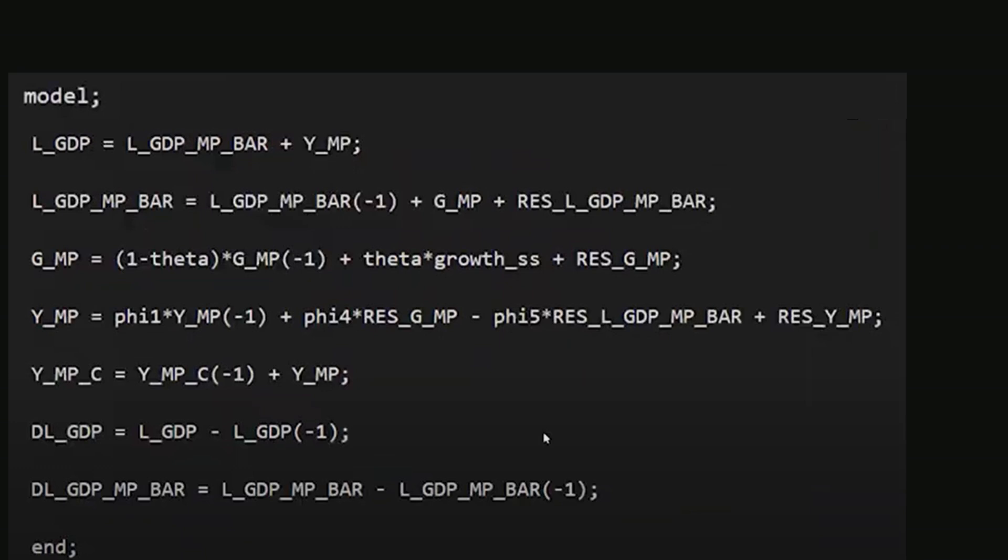The second equation describes the stochastic process for trend output, which equals its lag plus a persistent component and a shock. Similarly, the persistent component of trend growth follows the stochastic process, with coefficients on the lag and steady-state growth summing to 1.